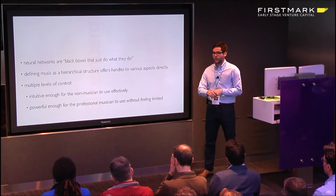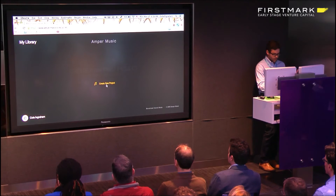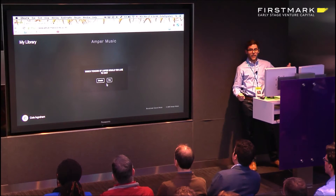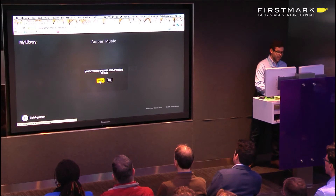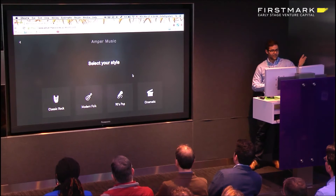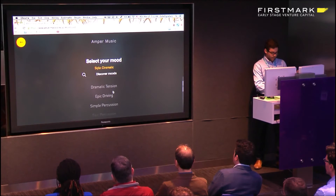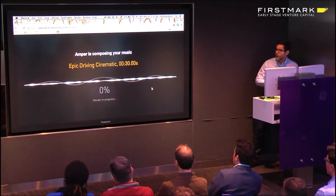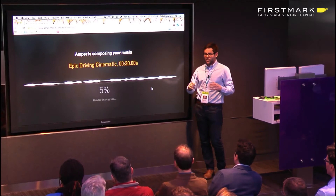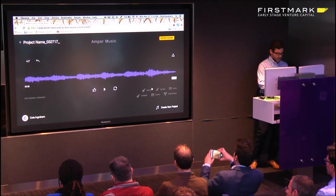I'd love to spend the last minute and a half showing you how Amper makes music. Amper is a web app, available here or via an API that integrates directly into content creation or distribution platforms. The most simple way to use Amper is to share three pieces of information: the style of music you want to create, the mood you want to convey, and the length. Let's create a piece of music - cinematic style, epic driving mood, 30 seconds long. Amper is going to create a unique piece of music, note by note, written from scratch. There are no loops, no licensed material - generated in real time using proprietary sample libraries and proprietary logic.